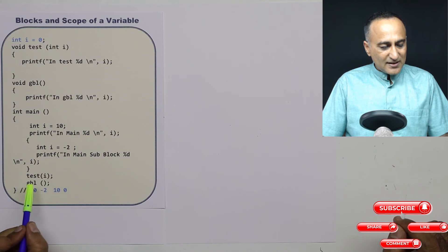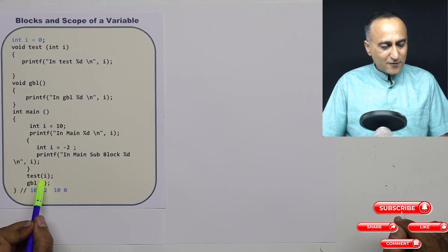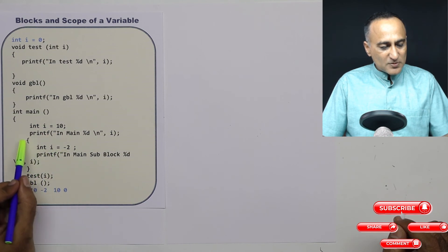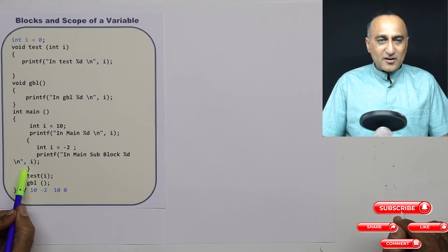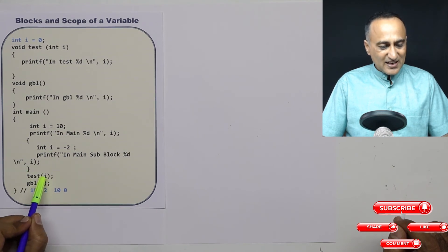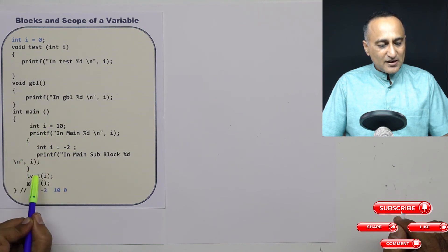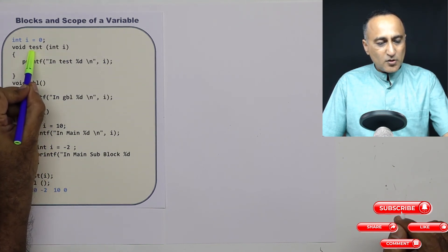So let's go to the first function called test of i. The value of i now is not going to be this because this i got created at the beginning of the flower bracket and ended at the end of the flower bracket. So when I say test i, the value of this local variable i in main is going to get passed to test.